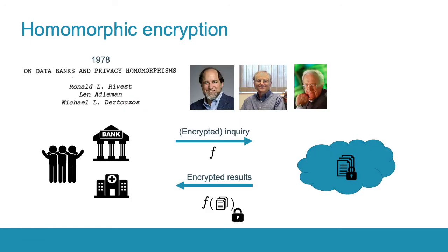In 1978, Rivest, Adleman, and Dertouzos suggested the following hypothetical solution: What if the cloud computes on ciphertexts such that the desired function is computed on underlying plaintexts, without decryption? After computation, the cloud provider can just send only encrypted results back to the data owner. The encryption algorithm used in this protocol is called homomorphic.